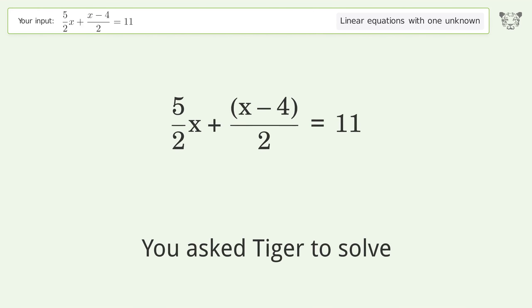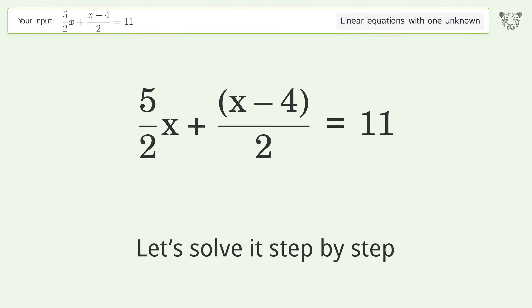You asked Tiger to solve this linear equation with one unknown. The final result is x equals 13 over 3. Let's solve it step by step. Simplify the expression, break up the fraction.